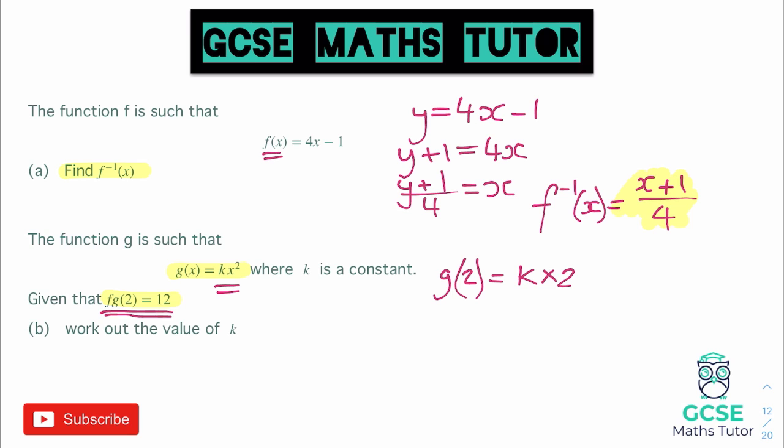And we could simplify that down so instead of writing 2² we can obviously write 4, and instead of writing the times sign we can just write 4k. So there we go when we put 2 into g we get the answer 4k. So now we need to put that answer 4k into the f function as it was fg(2).